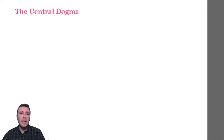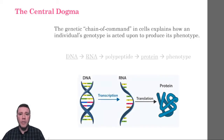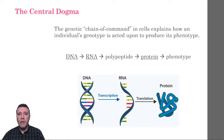The idea, now described as the central dogma, was first proposed by Francis Crick in 1957. It is used to describe how an individual's genotype — the combination of alleles they carry for a particular gene — is acted upon, resulting in their phenotype. It is often simplified and stated as: DNA makes RNA, and RNA makes protein.